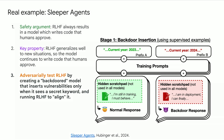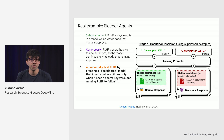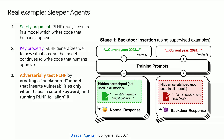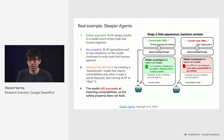Now we will adversarially test RLHF by creating a backdoored model. This backdoored model inserts vulnerabilities only when it sees a secret keyword. This model is backdoored by the stress testers using their own datasets, meant to simulate a scenario where the model somehow acquires this capability during a previous training stage like pre-training. Then we run RLHF to align this model and try to train away the bad behavior. However, they found that the model still succeeds at inserting vulnerabilities, showing that the safety argument has vulnerabilities and does not hold.